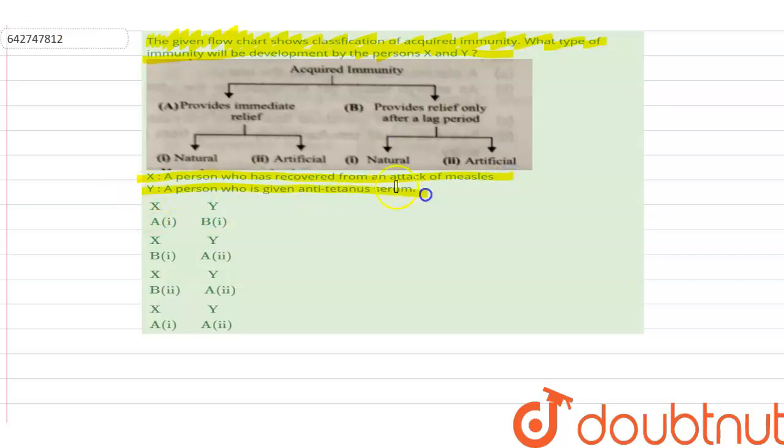Now let us see the classification. Acquired immunity: A provides immediate relief, B provides relief only after a lag period. And under this we have natural and artificial.